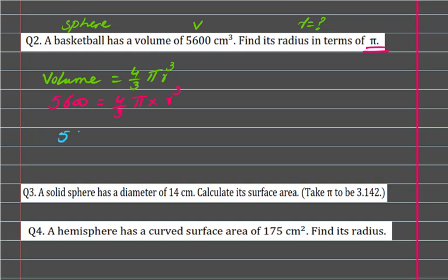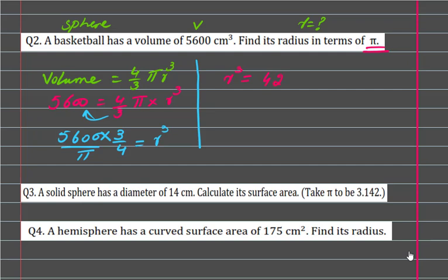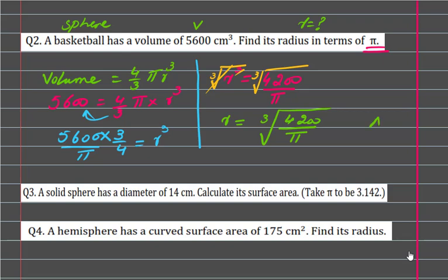Rearranging the formula: 5600 equals 4 over 3 pi r cubed. So r cubed equals 5600 times 3 divided by 4 divided by pi, which gives r cubed equals 4200 divided by pi. Taking the cube root on both sides, the answer is: r equals cube root of (4200 divided by pi).